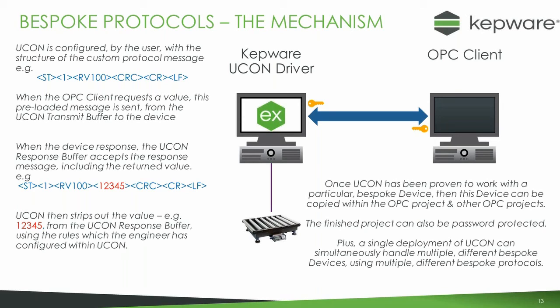Once you've configured UConn structures and rules for different values — for example register 100, then 102 or 105 — and proven it with one bespoke device, you can password-protect the project and copy and paste that device configuration within and across projects. So once done, it's reusable. For a commonly-used weighing scale, for instance, you can configure it once and reuse it repeatedly. A single UConn license can also support different rules for more than one type of bespoke device.